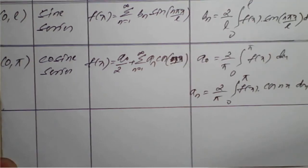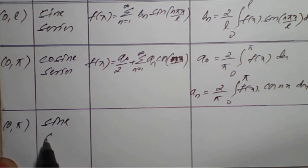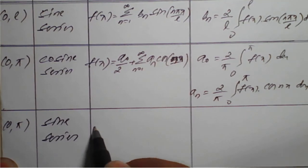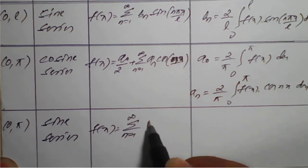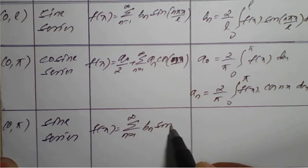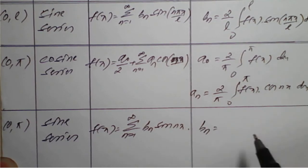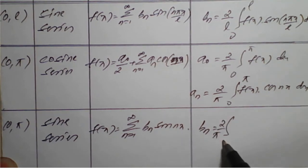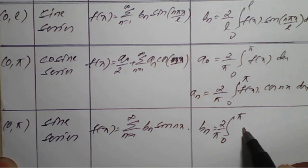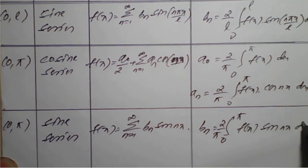For the interval 0 to pi, the sine series is: f(x) = summation n from 1 to infinity of bₙ sine(nx), where bₙ = (2/π) integral from 0 to pi of f(x) sine(nx) dx.